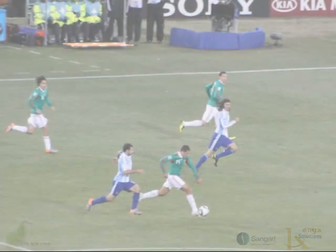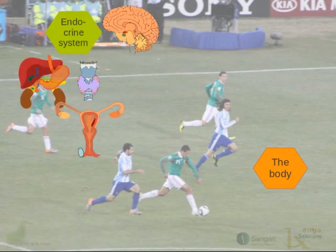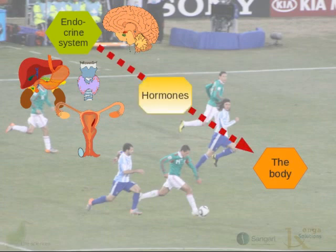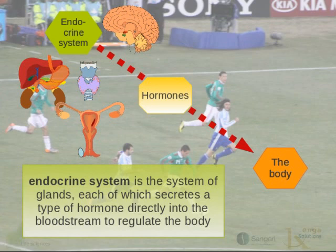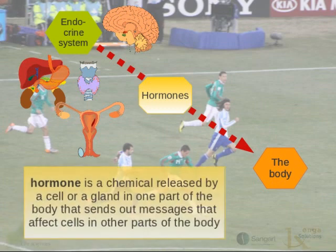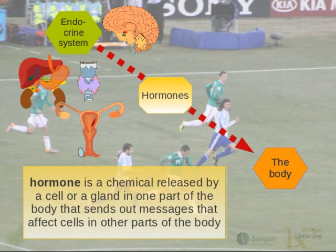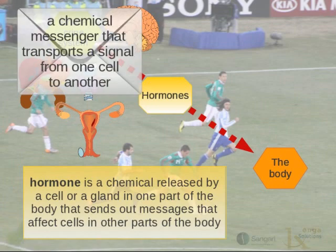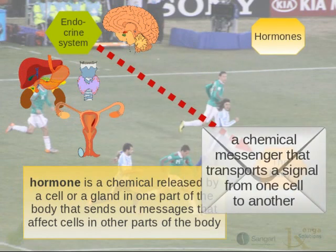Now, let's go back to our soccer team. The players — our body — the endocrine system coach communicates with the body making use of chemical substances called hormones. The endocrine system is thus the system of glands, each of which secretes a type of hormone directly into the bloodstream to regulate the body. A hormone, then, is a chemical released by a cell or a gland in one part of the body that sends out messages that affect cells in other parts of the body. We can think of a hormone as a chemical messenger that transports a message or signal that has a purpose from one cell in the body to another.